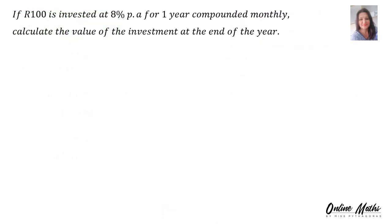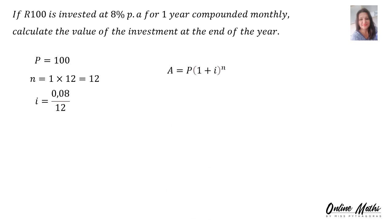With this example I'm going to explain the correlation between the two rates. If R100 is invested at 8% per annum for one year, compounded monthly, calculate the value of the investment at the end of the year. P is 100, N is one year times 12 because it's compounded monthly, so N is 12. I is the rate of 8% — that is 0.08 divided by 12.